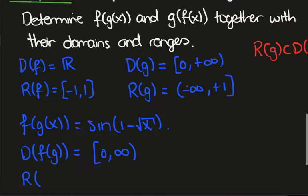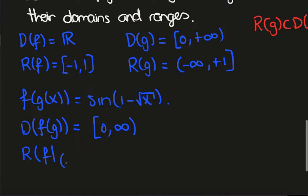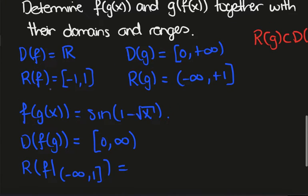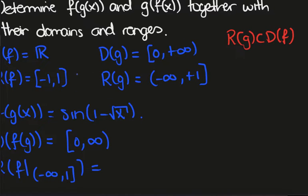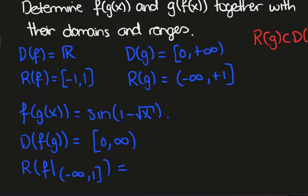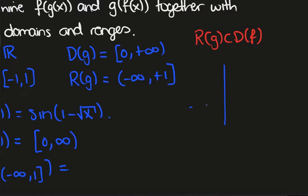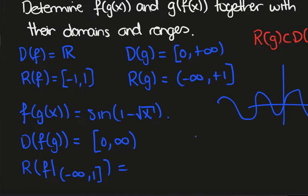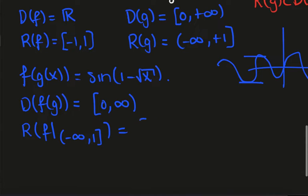The range of the composite is the range of f restricted to the range of g. If we put (-∞, 1] into f, since sine oscillates and definitely achieves the levels -1 and 1, the range will be [-1, 1].